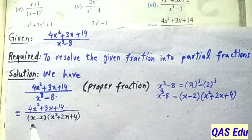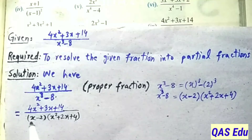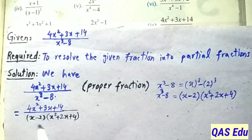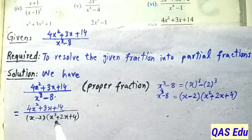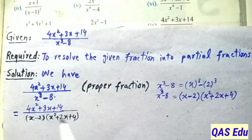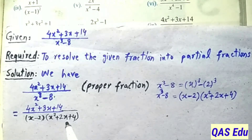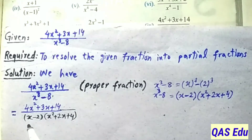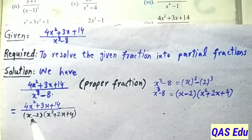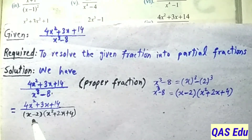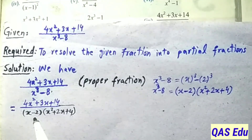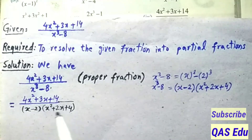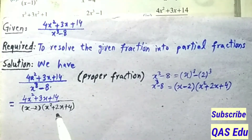In the denominator we have two factors. The first factor has power 1 - it is a linear factor. The second factor has power 2 - it is a quadratic factor that cannot be further factorized. So we set up the partial fractions position: for the linear factor we place one constant in the numerator.